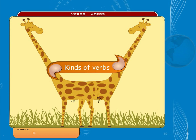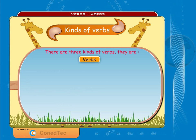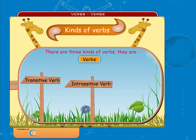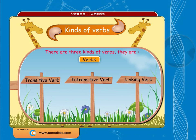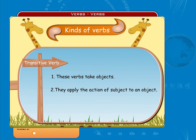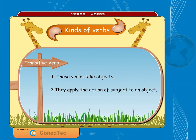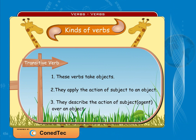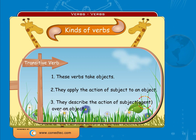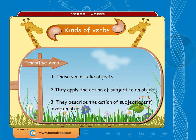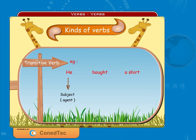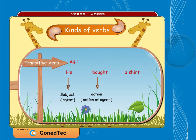There are three kinds of verbs: transitive verbs, intransitive verbs, and linking verbs. Transitive verbs take objects — these verbs carry the action of a subject and apply it to an object. They tell us what the subject does to something else. The subject here is the agent, and the something else is the object. Example: 'He bought a shirt' — 'he' is the agent, 'a shirt' is the object.